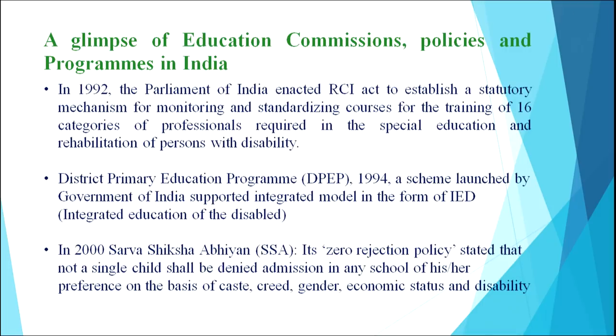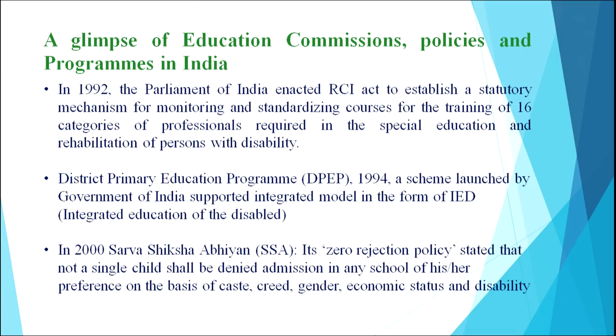In 1992, the Parliament of India enacted the RCI Act or Rehabilitation Council of India Act to establish a statutory mechanism for monitoring and standardizing courses for training of 16 categories of professionals required in special education and rehabilitation of persons with disability. This established a parallel system of education other than the regular mainstream system. This was followed by the District Primary Education Programme (DPEP) 1994, a scheme launched by the Government of India that supported the integrated model in the form of Integrated Education of the Disabled (IED).